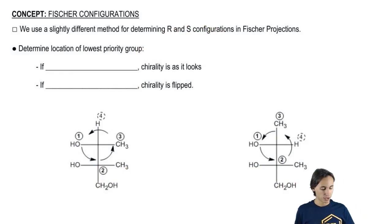So this is basically the way it works. We want to determine the location of the lowest priority group. What I mean by location is we want to figure out is it vertical or is it horizontal. And the lowest priority group is always going to be four. So basically I just want to know where is four.